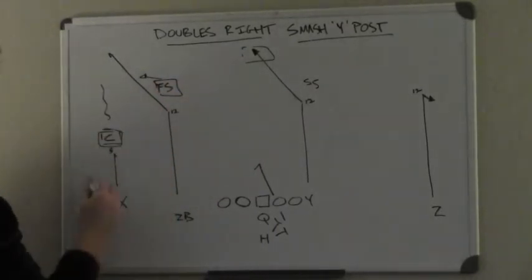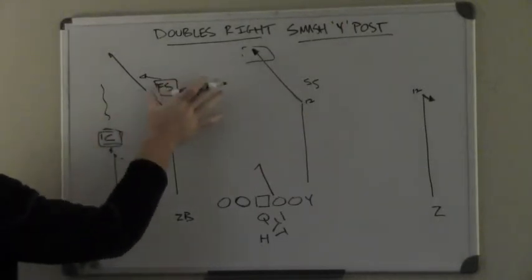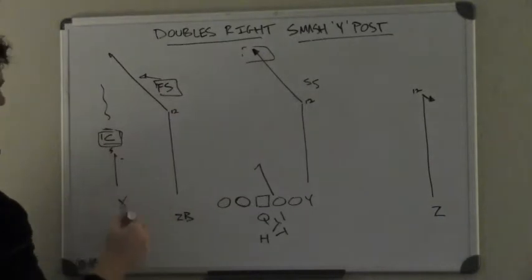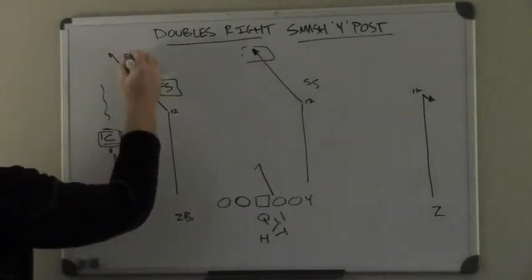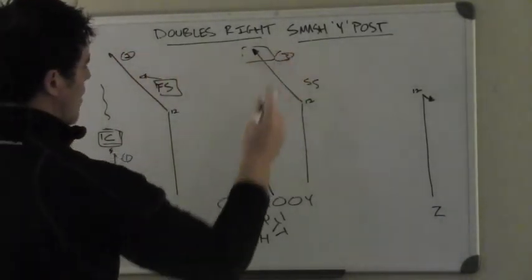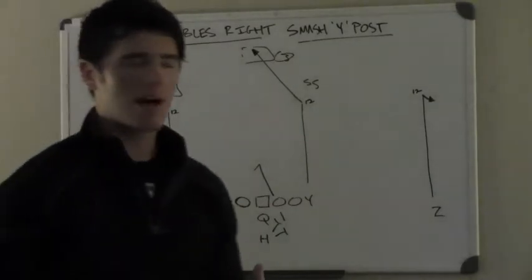If the cornerback drops off, he should take the hitch. If the cornerback stays up, he's just going to read the free safety right to left. So his progression is going to be one, two, three, and this play is off of a five-step drop with a hitch.